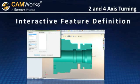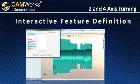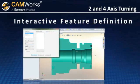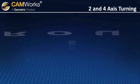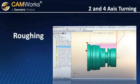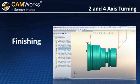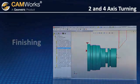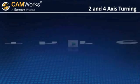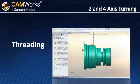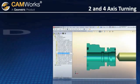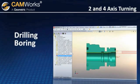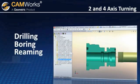This interactive approach gives you total control over the features you want to machine. Two- and four-axis turning also includes automatic roughing, finishing, grooving, threading, cut-off, and single-point cycles such as drilling, boring, reaming, and tapping.